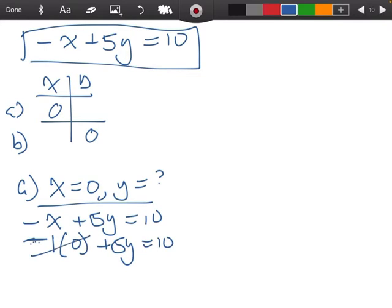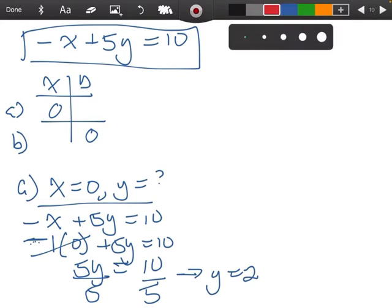Negative 1 times 0 is 0, so I'm left with 5y equals 10. When I divide both sides by 5, we end up with y equals 2. Right over here, I'm going to put the number 2.